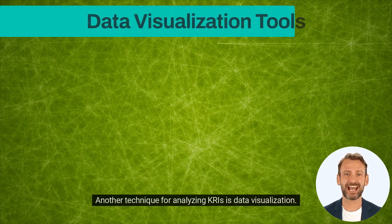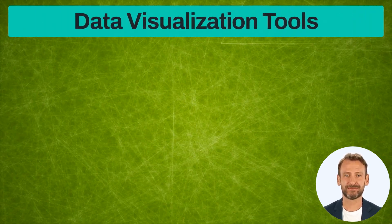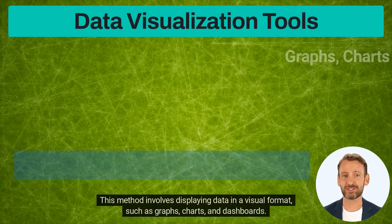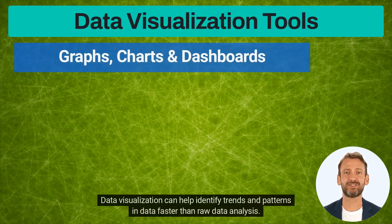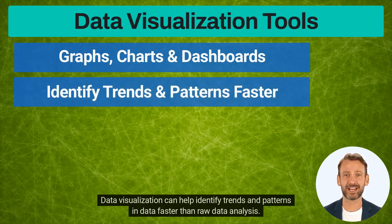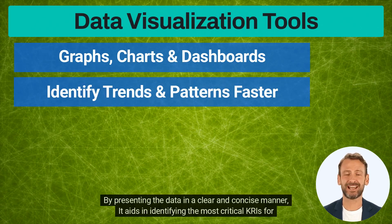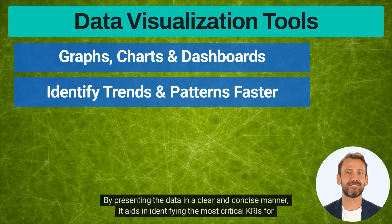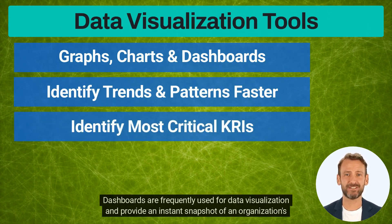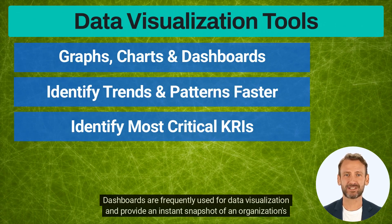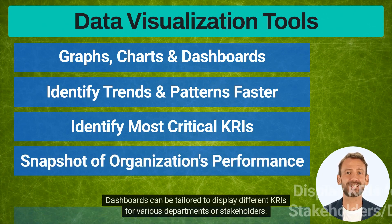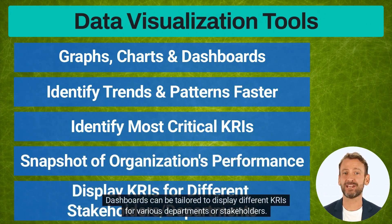Another technique for analyzing KRIs is data visualization. This method involves displaying data in a visual format, such as graphs, charts, and dashboards. Data visualization can help identify trends and patterns in data faster than raw data analysis. By presenting the data in a clear and concise manner, it aids in identifying the most critical KRIs for the company. Dashboards are frequently used for data visualization and provide an instant snapshot of an organization's performance, and can be tailored to display different KRIs for various departments or stakeholders.